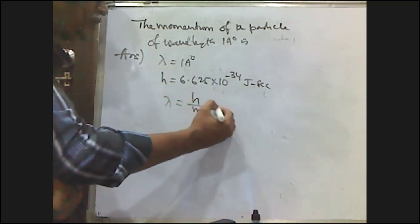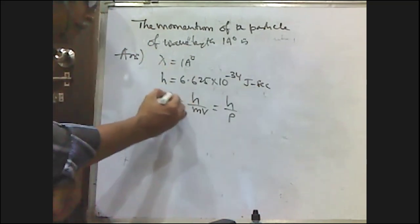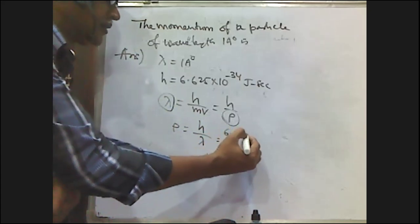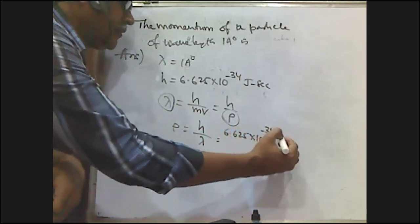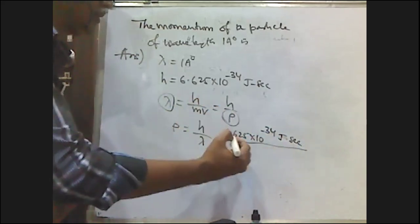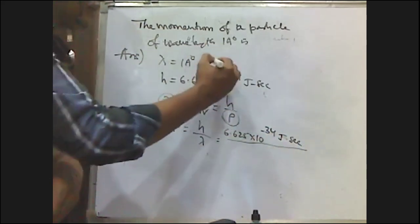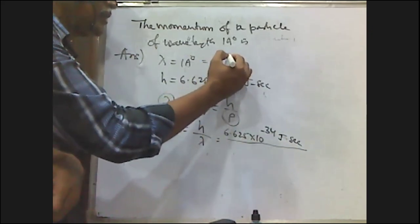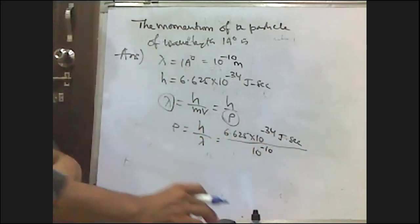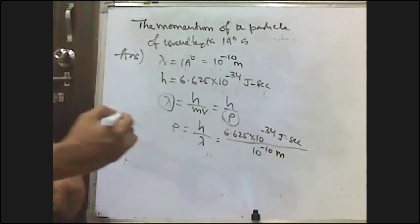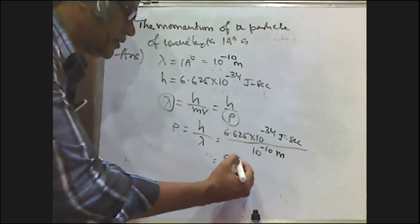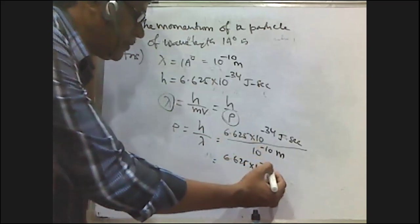So p = h/lambda = 6.625 × 10⁻³⁴ divided by 10⁻¹⁰ meters = 6.625 × 10⁻²⁴. One joule·second equals kg·m²/s, so the units work out as kg·m/s. Therefore p = 6.625 × 10⁻²⁴ kg·m/s.